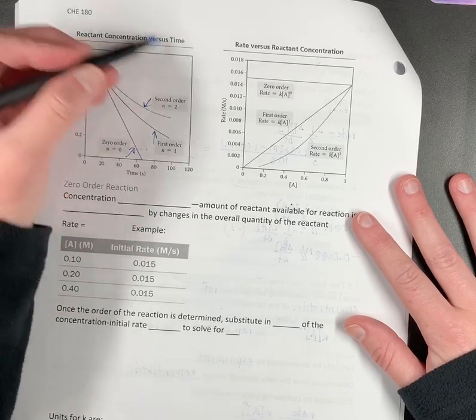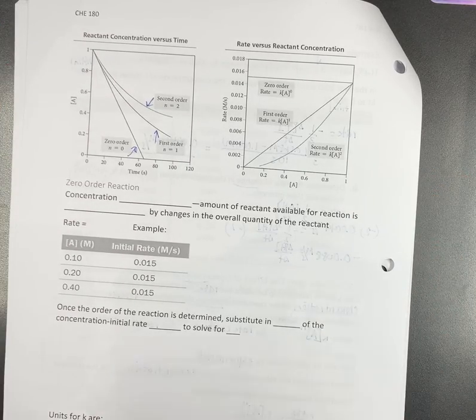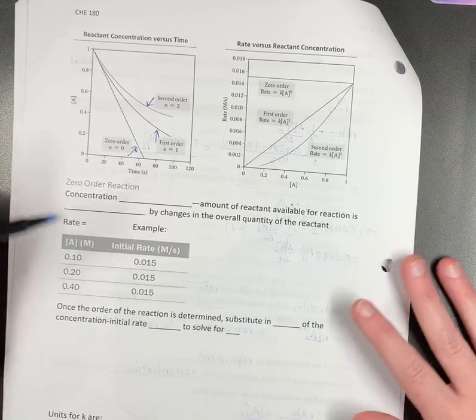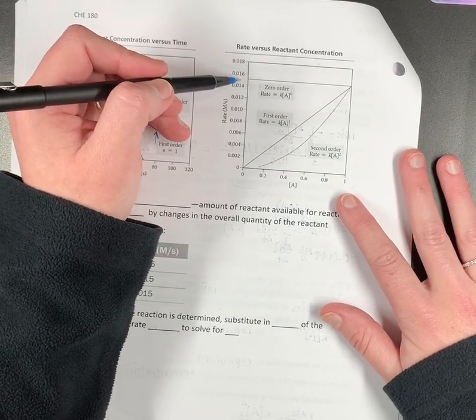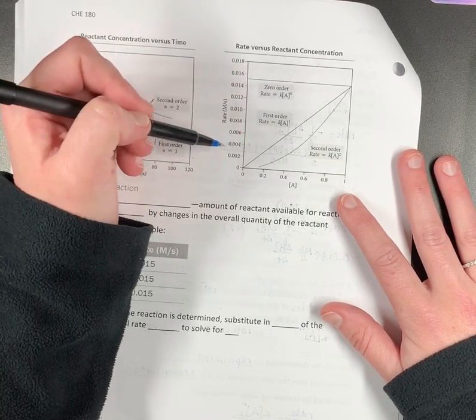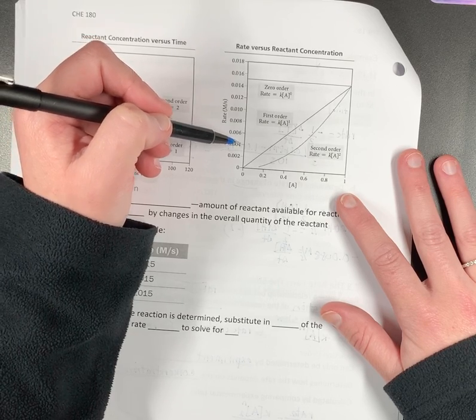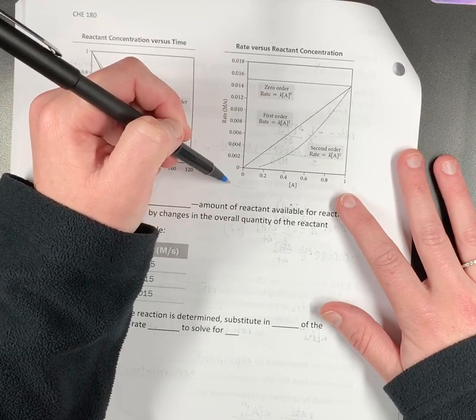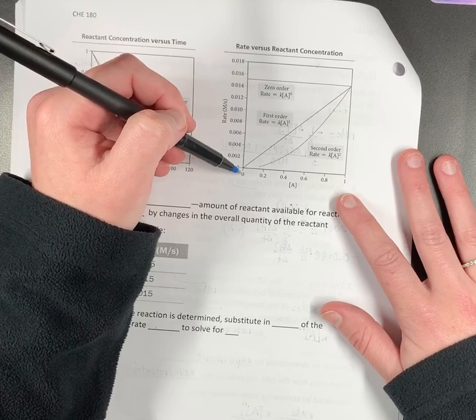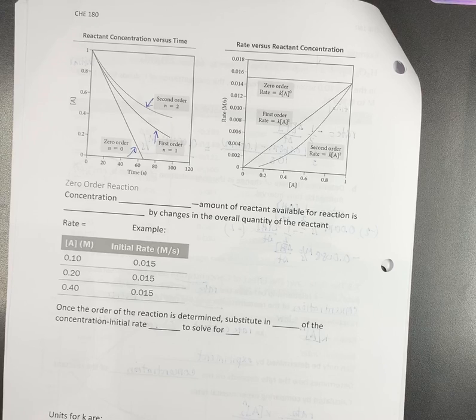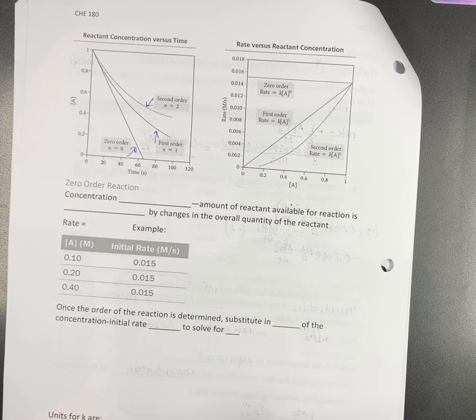So you can use this information to determine what the rate is, and then you make a second graph. That is the rate versus the reactant concentration. If it's a flat line, it is zero order. If it's a straight line with a slope, it is first order. And if it looks like part of a parabola, it's second order. Anything about exponents, this makes perfect sense. This is not defying math.